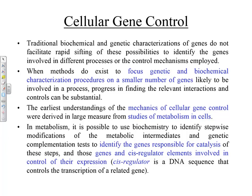Traditional biochemical and genetic characterizations of genes do not facilitate rapid sifting of possibilities to identify the genes involved in different processes or the control mechanisms employed. If you pick up one gene and do its analysis, you may not get the entire story because so many things are interacting together. However, when methods exist to focus characterization on a smaller number of genes likely involved in a process, progress in finding relevant interactions and controls can be substantial. A good example is metabolism, where there is pathway knowledge — biologists believe when one protein acts a certain way, something else will happen.